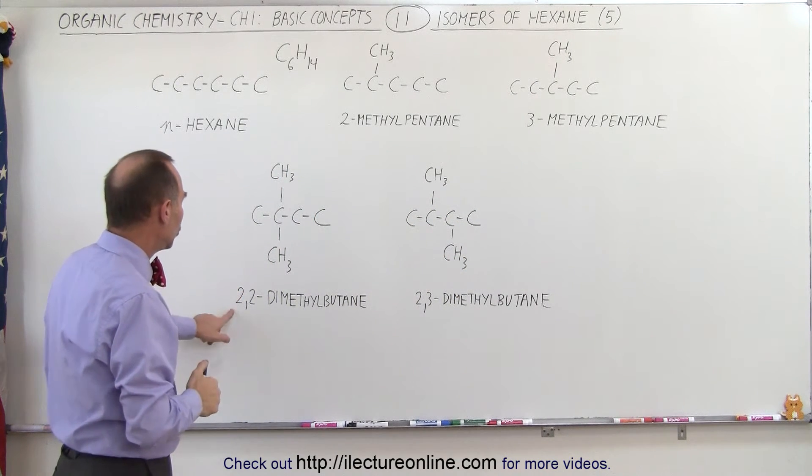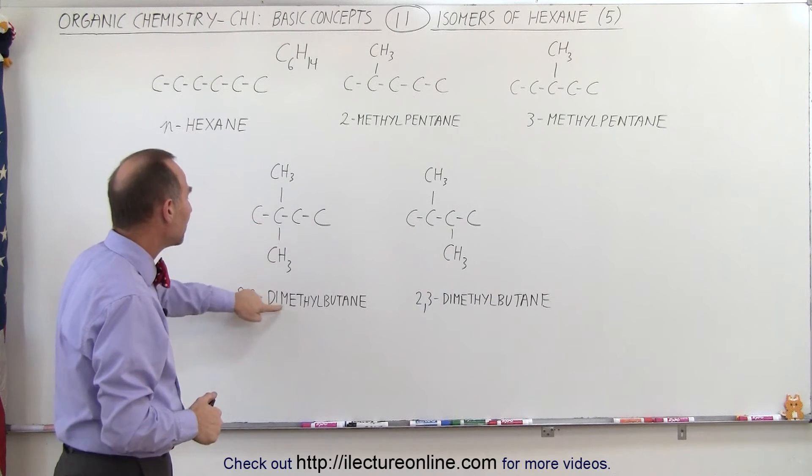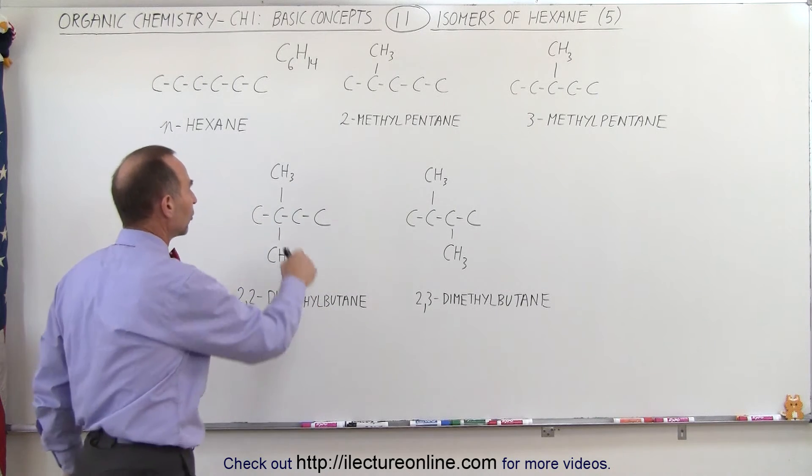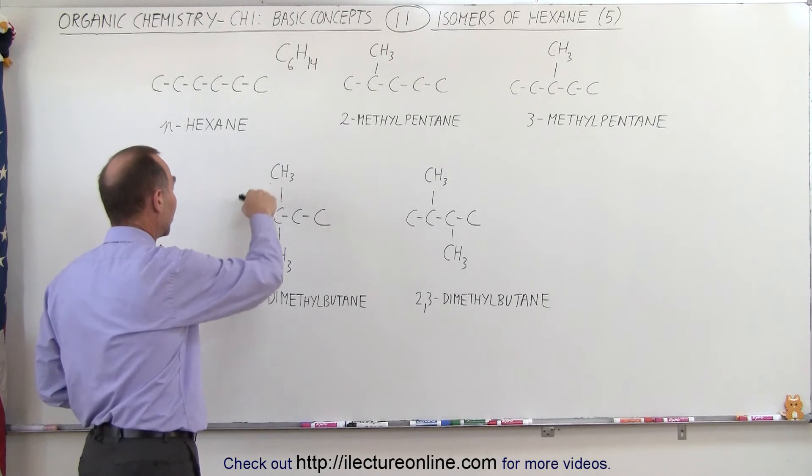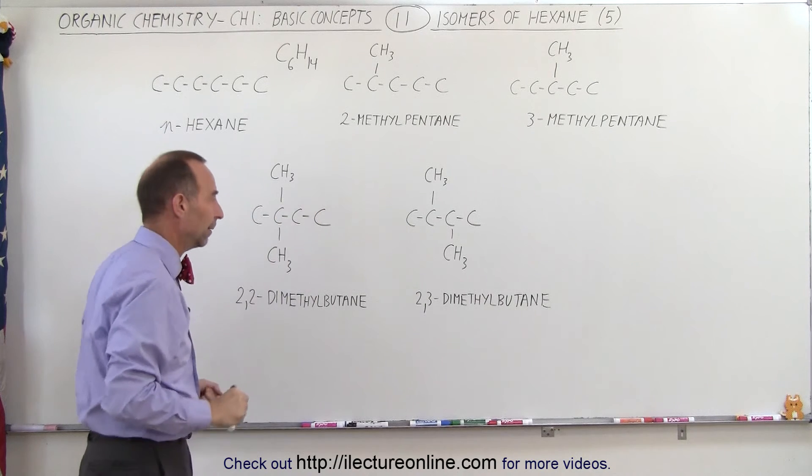This one is called 2,2-dimethylbutane, because both of them are connected to the second carbon. Dimethyl, because there's two methyl groups, and butane, because now there's only four carbons left in the string. Of course, again, imagine that the carbons here have hydrogens connected to them, three of them here, two of them there, and three of them there.